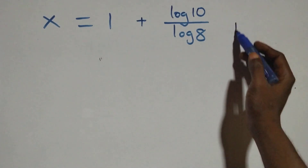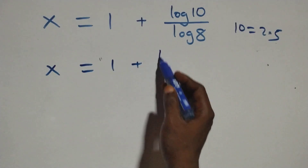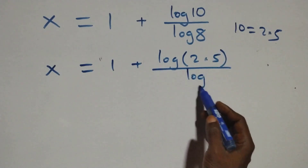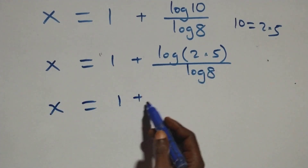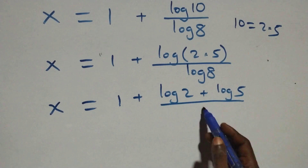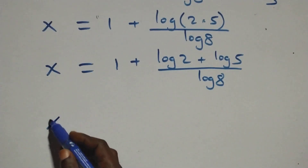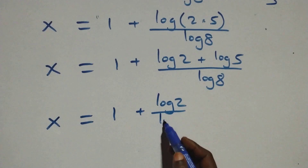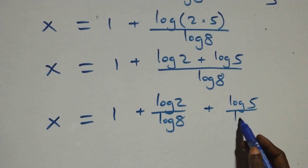Next, 10 can be written as 2 times 5. So we have x equals log(8 times 10) over log 8. Applying the product rule again gives x equals log 8 plus log 2 plus log 5, all over log 8. Separating into fractions: x equals 1 plus (log 2 over log 8) plus (log 5 over log 8).